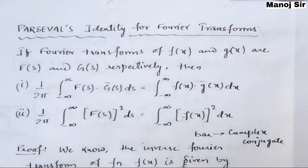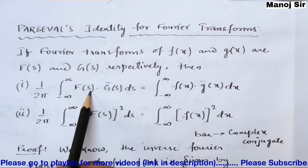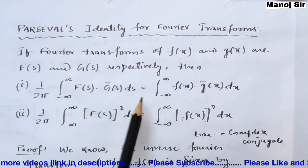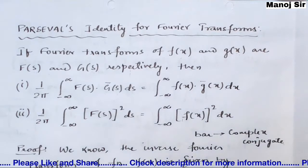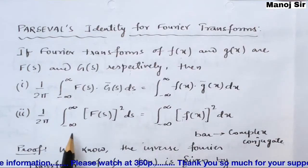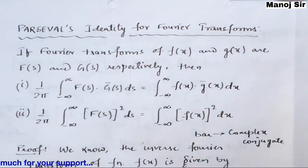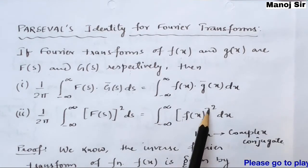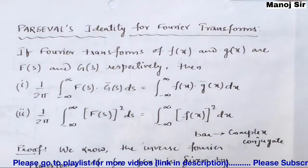So the first identity is: (1/2π) ∫₋∞^∞ F(s) · Ḡ(s) ds = ∫₋∞^∞ f(x) · ḡ(x) dx. The second identity is: (1/2π) ∫₋∞^∞ |F(s)|² ds = ∫₋∞^∞ |f(x)|² dx. We are going to prove both identities one by one.